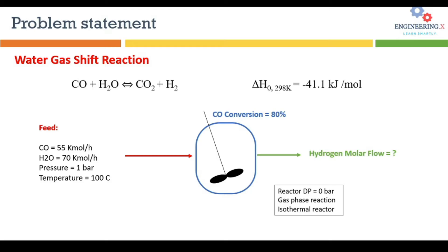The water gas shift reaction is a gas phase reaction in which carbon monoxide reacts with steam to produce carbon dioxide and hydrogen. It is the famous reaction for production of hydrogen. The heat of reaction is given as around 41 kilojoules per mole. The feed consists of 55 kmol per hour carbon monoxide and 70 kmol per hour steam entering the reactor at 100°C and 1 bar pressure. The conversion for carbon monoxide is 80%, making carbon monoxide the base component.